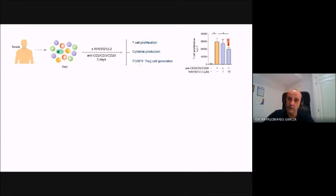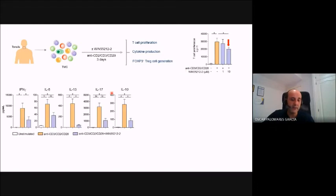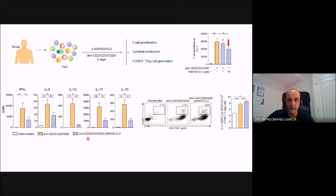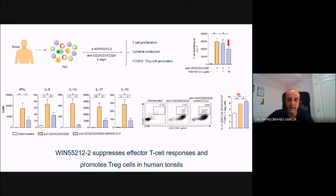As you see here, WN significantly impairs the induction of T-cell proliferation induced by the mixture of monoclonal antibodies, as well as inhibited the production of TH1, TH2, IL-5 and IL-13, and TH17 cytokines induced by the activation with this combination of monoclonal antibodies in the tonsil tissues. Interestingly, WN significantly enhanced the percentage of FOXP3-positive regulatory T-cells under these conditions, thus demonstrating that WN is able to suppress effector T-cell responses while promoting regulatory T-cells in human tonsils.